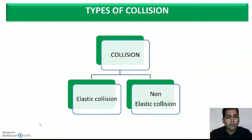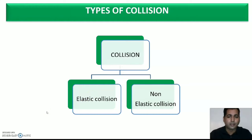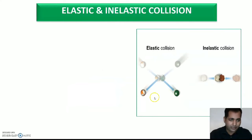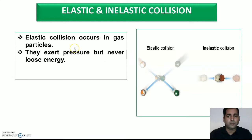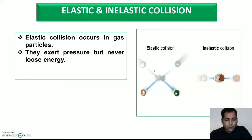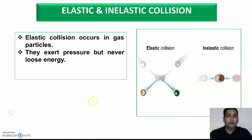Now let's talk about types of collision. There are two types: the first is called elastic collision and the second is called non-elastic collision. Elastic collision occurs in gas particles, and the reason is simple — the packing of atoms is very low compared to solids, because for elastic collision we need some free spaces. In elastic collision, particles exert pressure but never lose energy. This is one of the most important characteristics of gaseous dielectric material.